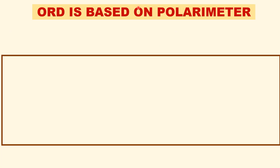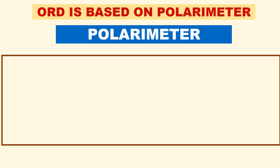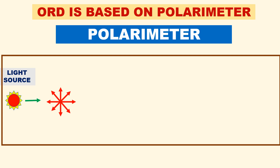Before we study ORD, note that ORD is based on polarimetry. So what is polarimetry? The ORD instrumentation is based on polarimetry, so let us first clearly understand how polarimetry works. It consists of a light source that emits only one particular wavelength — for example, a sodium vapor lamp emitting a single wavelength. It is a monochromatic light source.